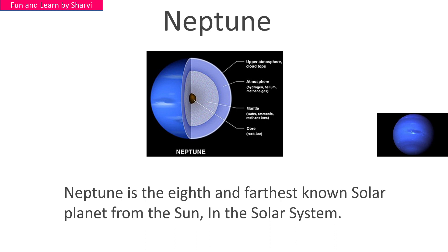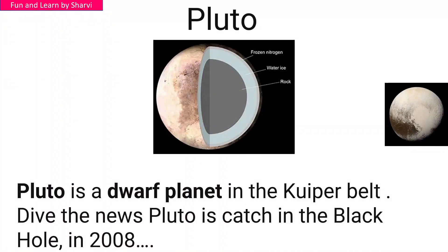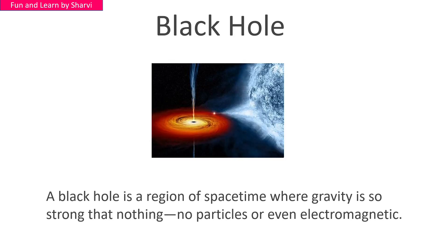Now let's move to Pluto. Pluto is a dwarf planet in the Kuiper Belt. In 2006 it was reclassified. Pluto's composition includes frozen nitrogen, water ice, and rock.